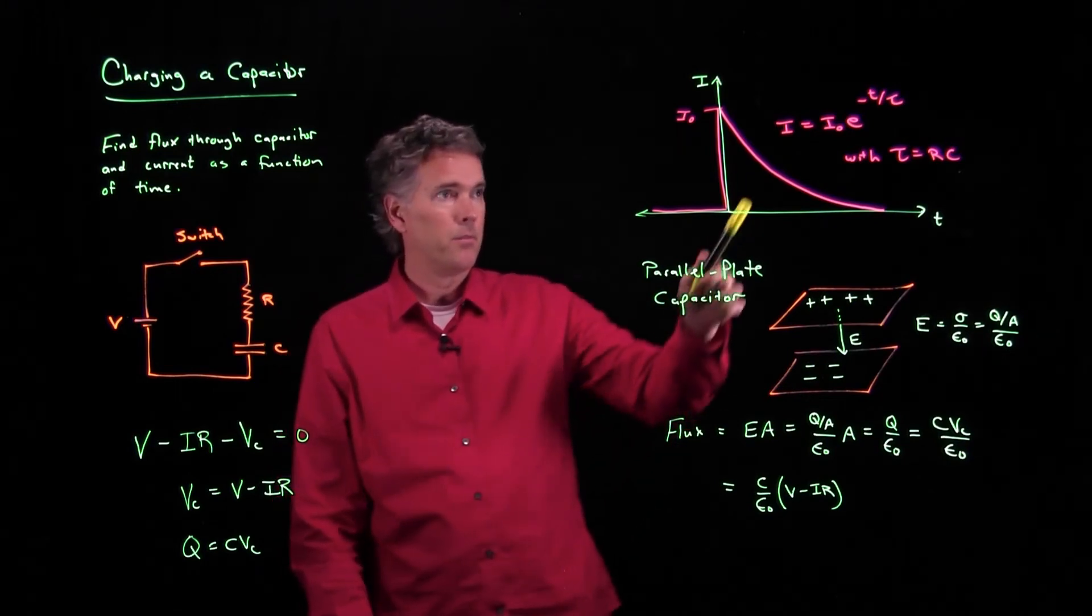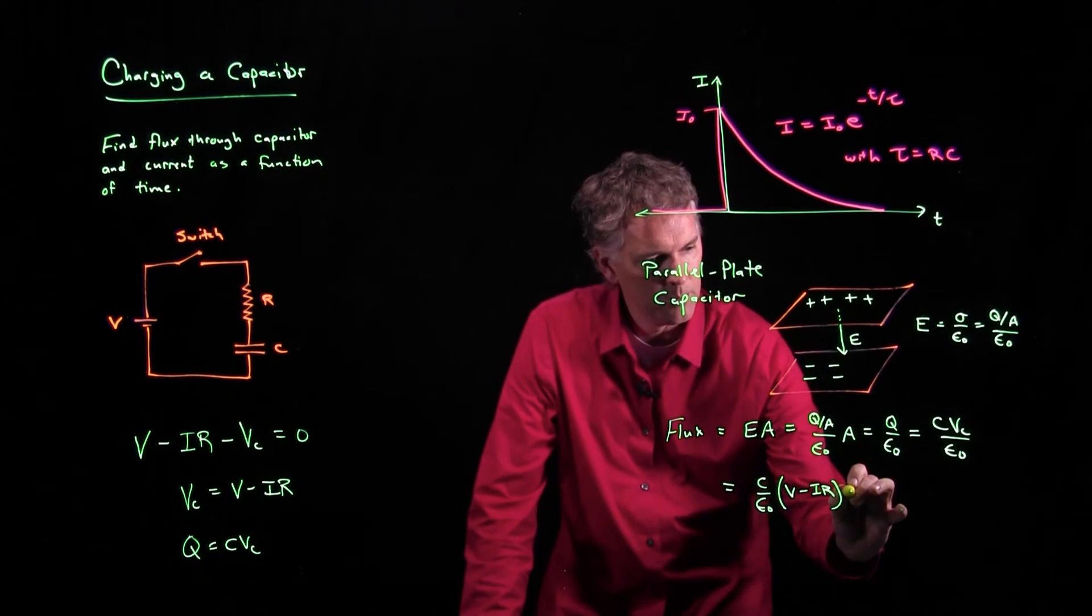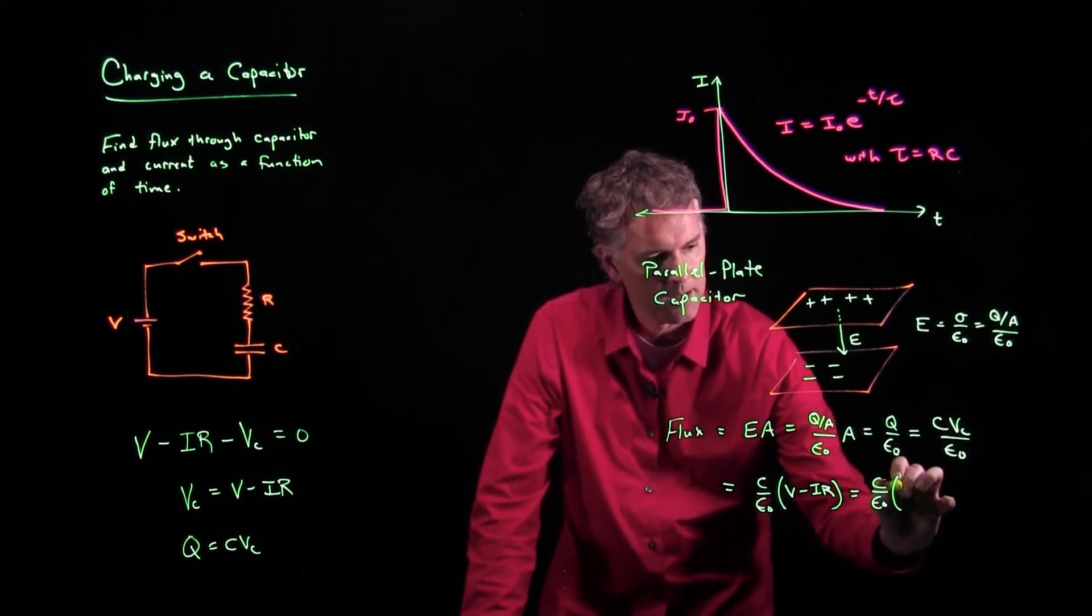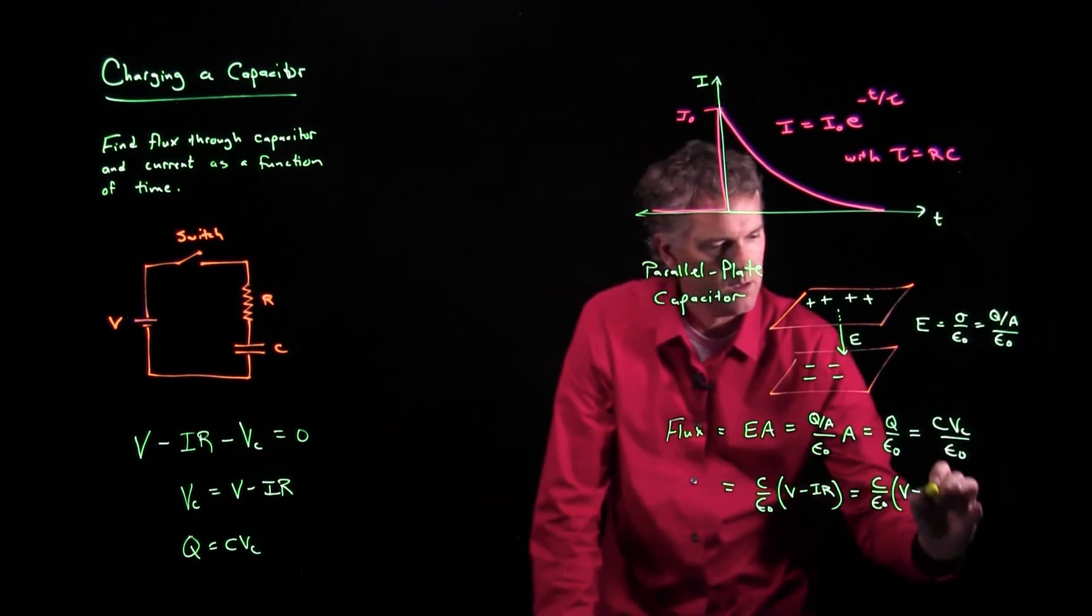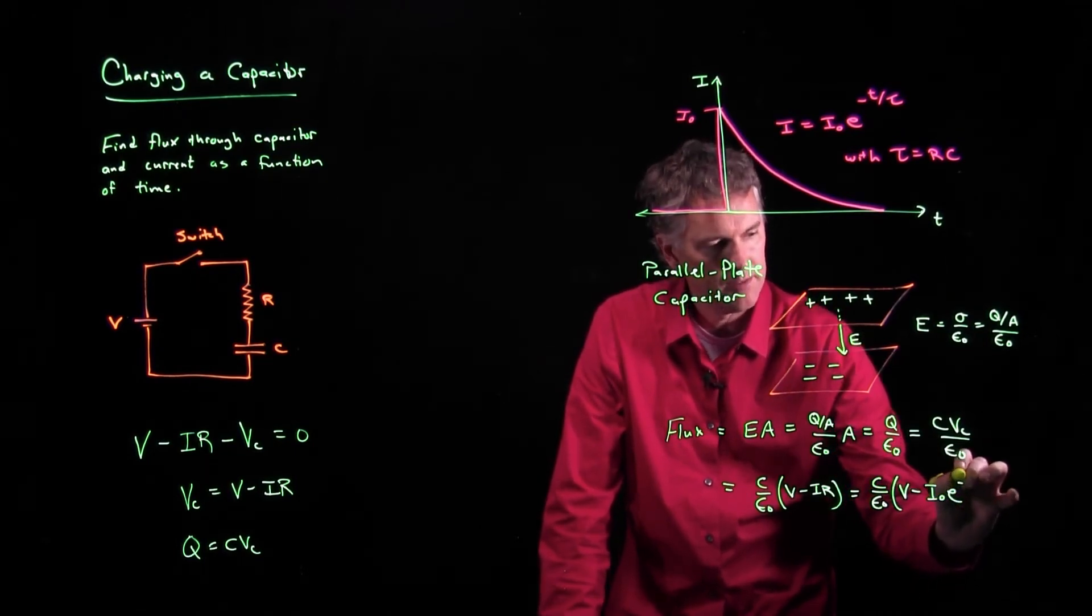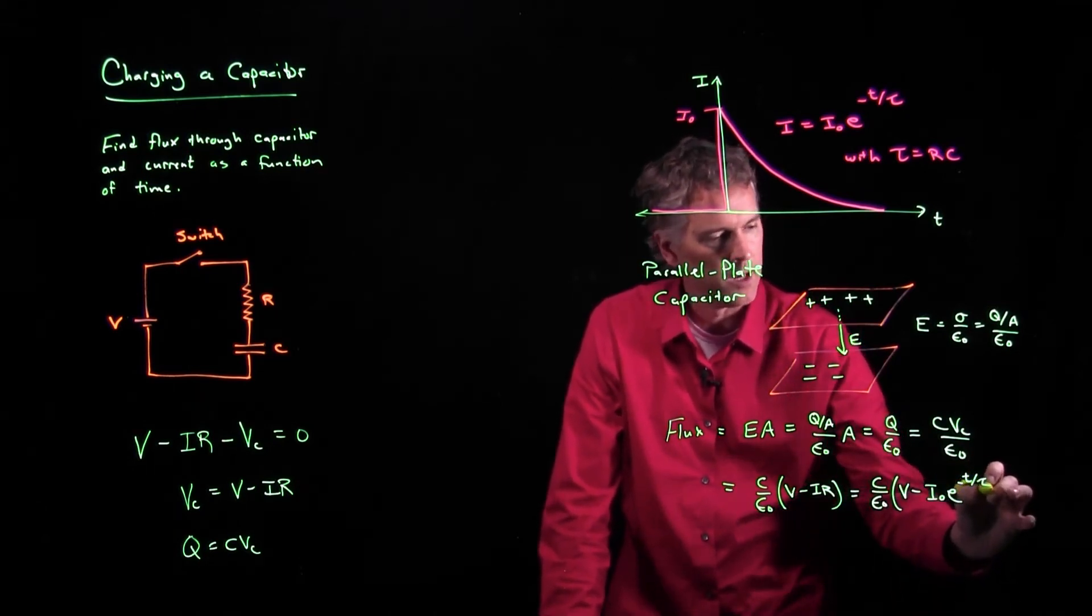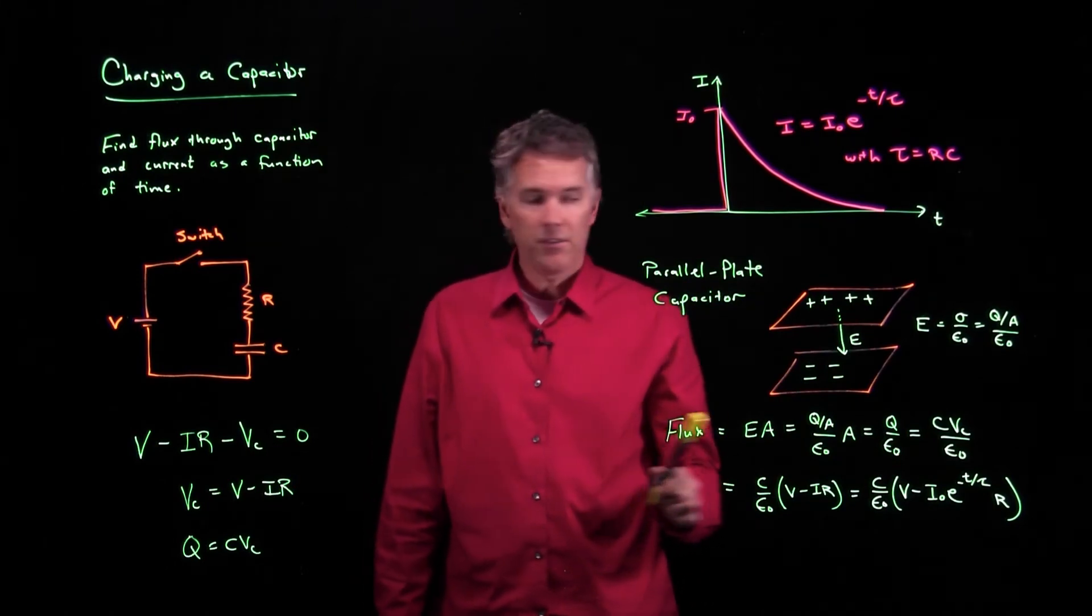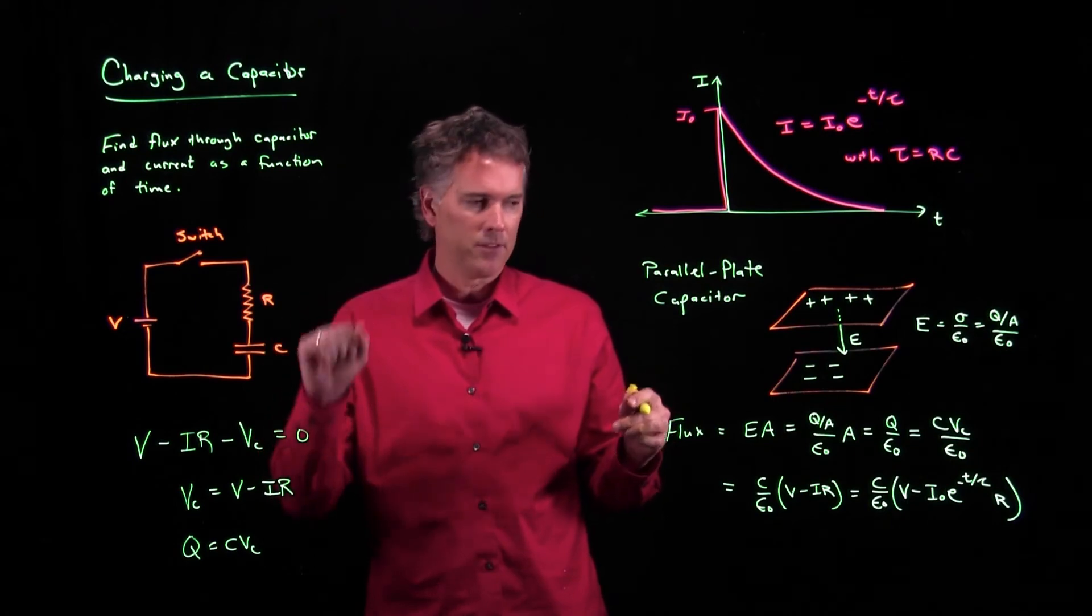I is given by this thing right here. So what does this all become? We get C over epsilon naught times V minus minus I naught E to the minus T over tau, and then we've got to multiply that stuff by R. So now this is the flux through the capacitor as a function of time.